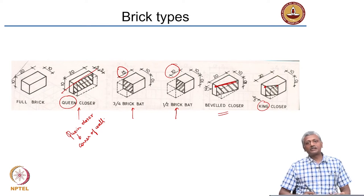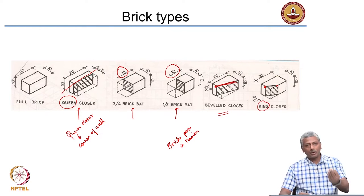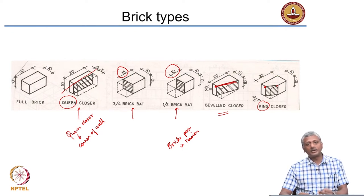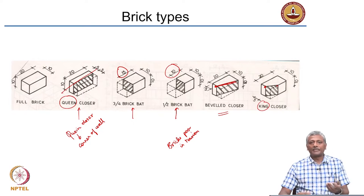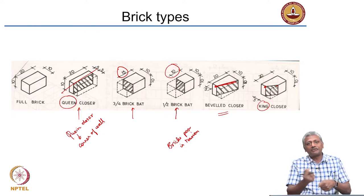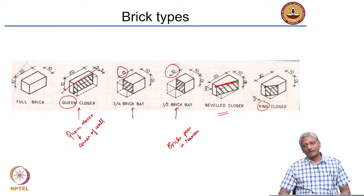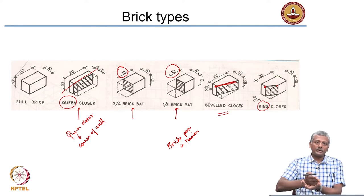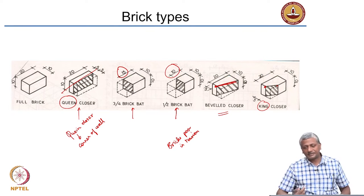Like most construction materials, bricks are poor in tension. Most construction materials — brick, stone, concrete — are very strong in compression but poor in tension. Steel is as strong in compression as it is in tension. Wood is the opposite, being much stronger in tension, especially along the grain fibres, than in compression. When the mason uses a trowel to slice a brick, it slices easily because the edge of the trowel puts the brick into tension, causing it to fracture.